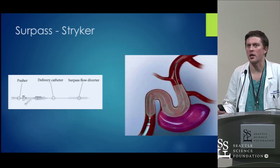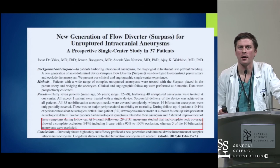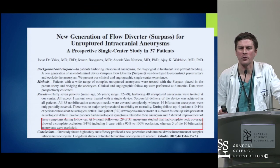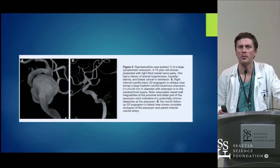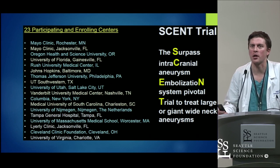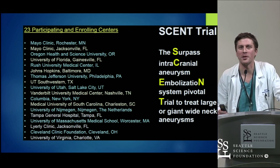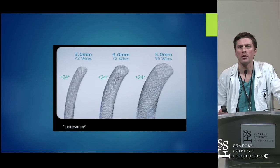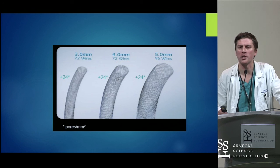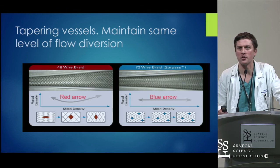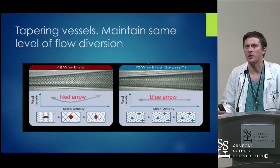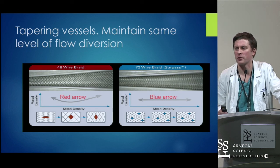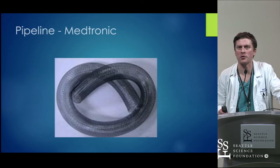The Surpass — Stryker's variant on the flow-diverting stent — has a trial with very good results: 95% occlusion. Similar to what we've seen with Pipeline, this is an example of a very large cavernous aneurysm treated with Surpass with an excellent result. In the SCENT trial, one of the differences with Surpass is that for larger stents you have more wires, providing the same flow-diverting capability. The mesh density is also more uniform compared to other flow diverters, which is thought to increase flow-diverting capabilities in tapering vessels.